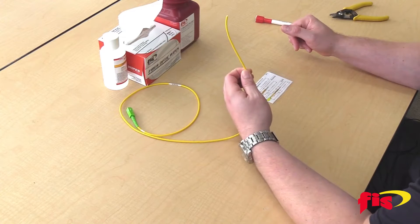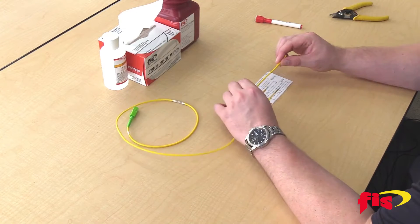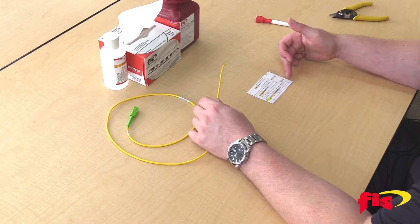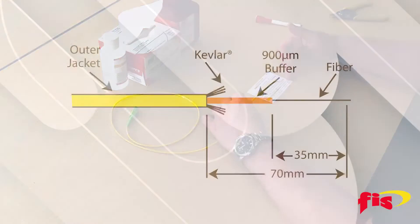This is a three millimeter fiber optic cable in diameter. If you notice on this strip chart here, we're going to be looking at the bottom diagram which is for two or three millimeter cable.